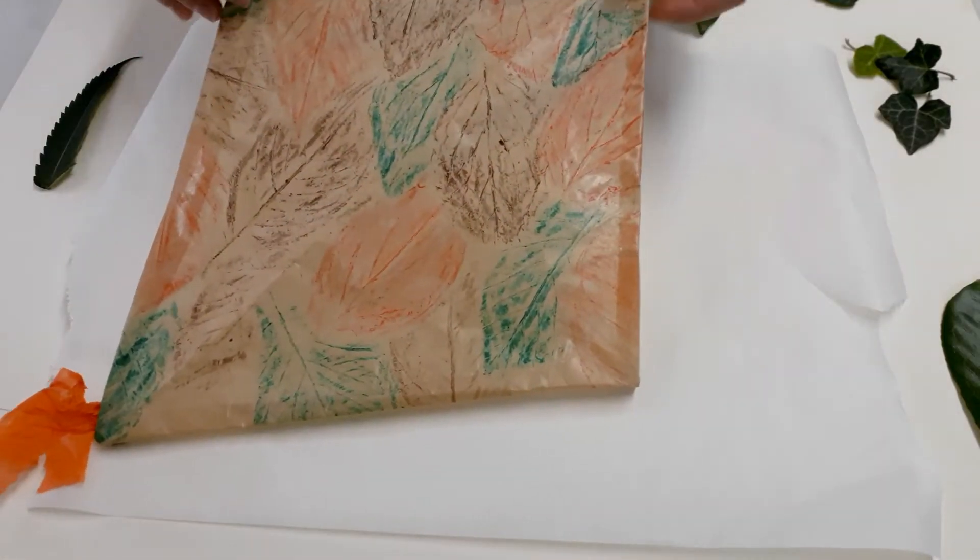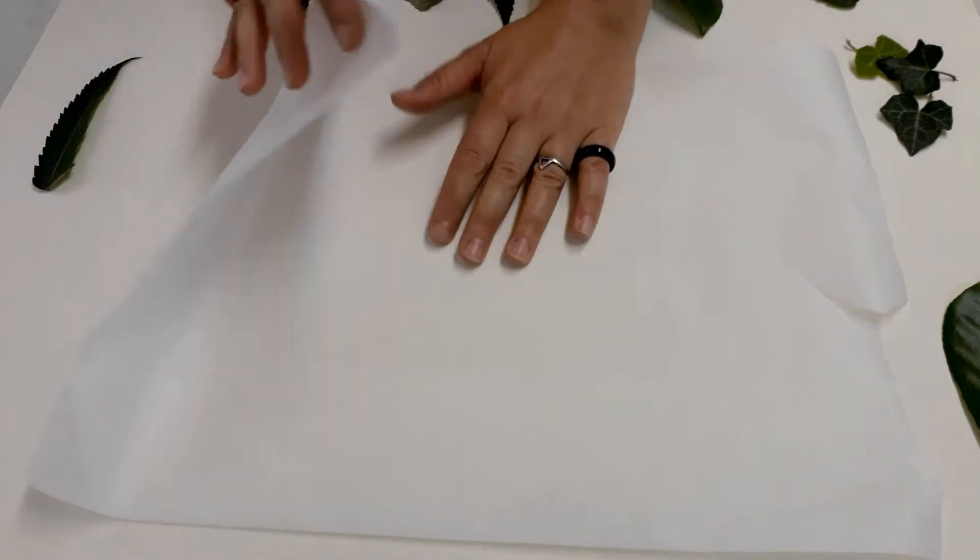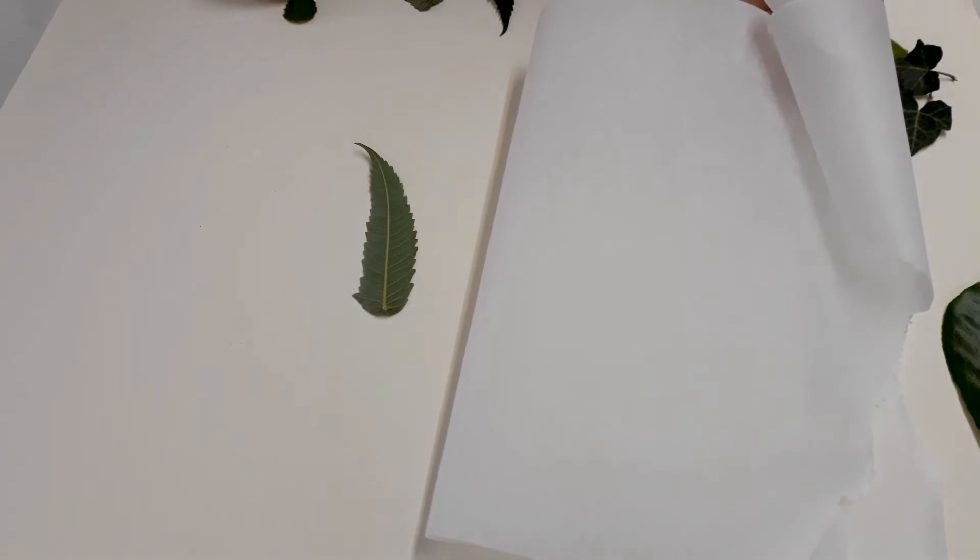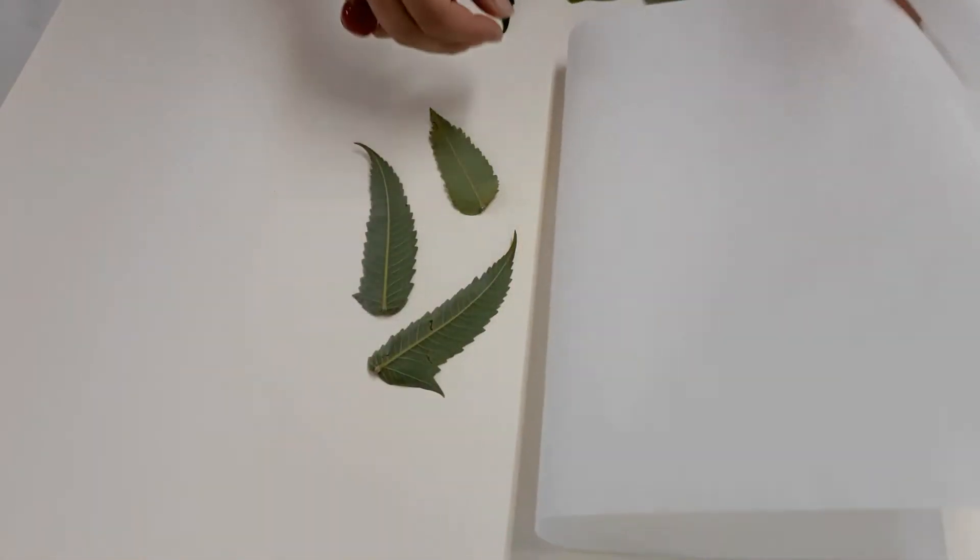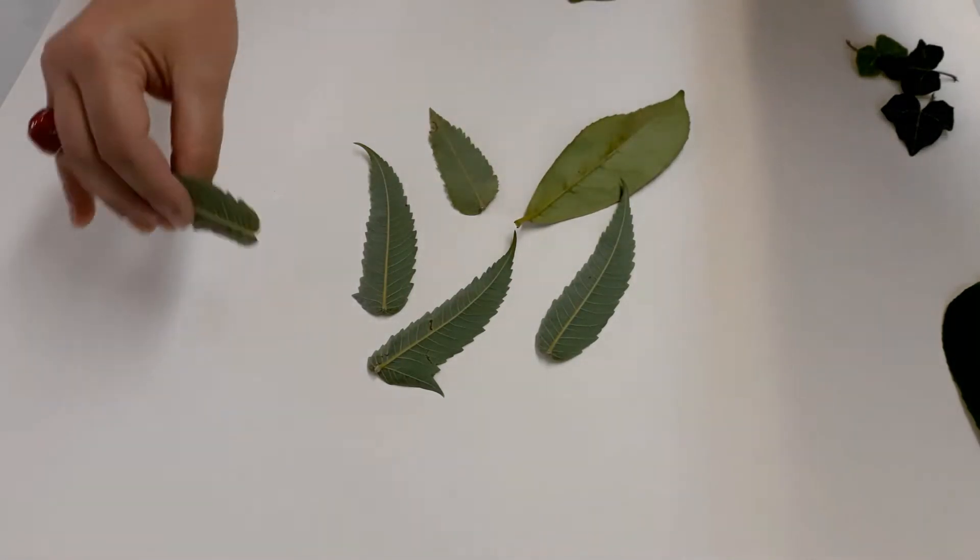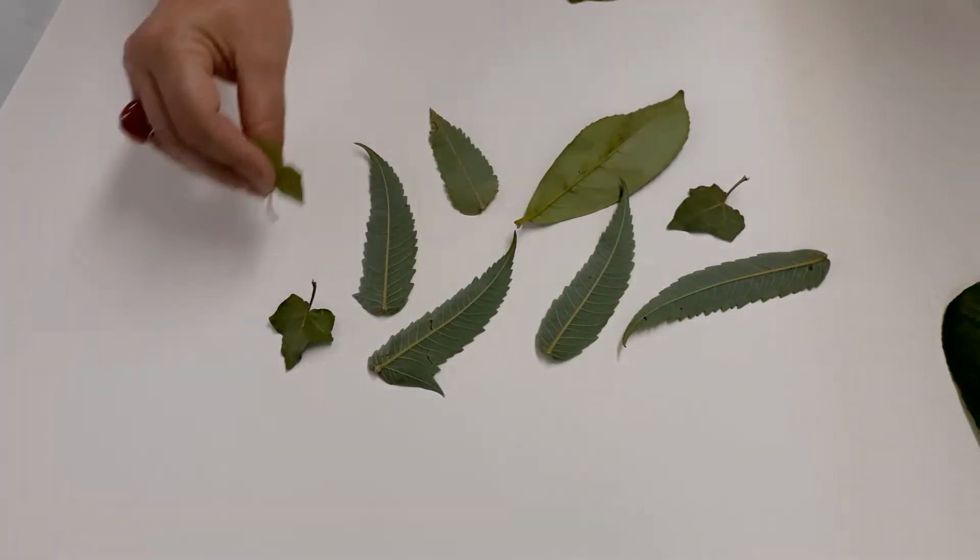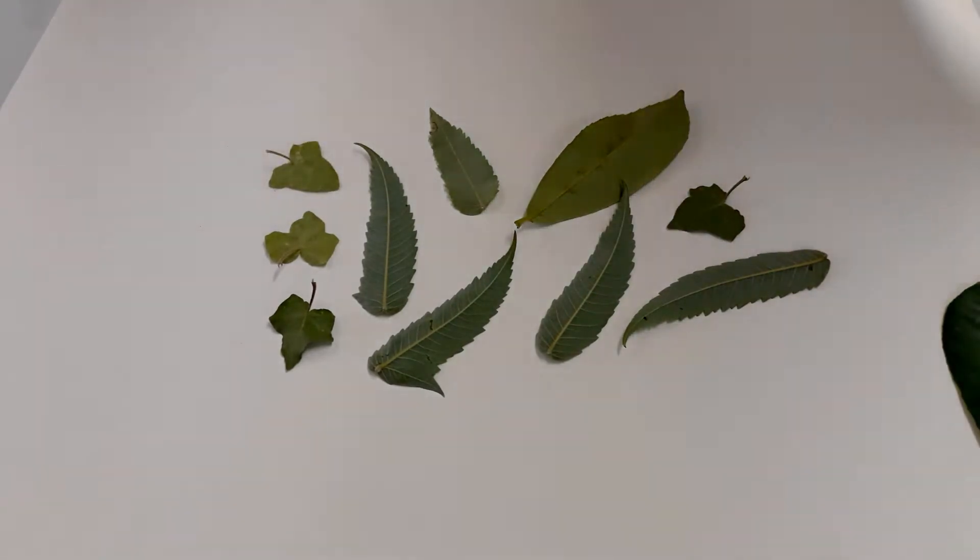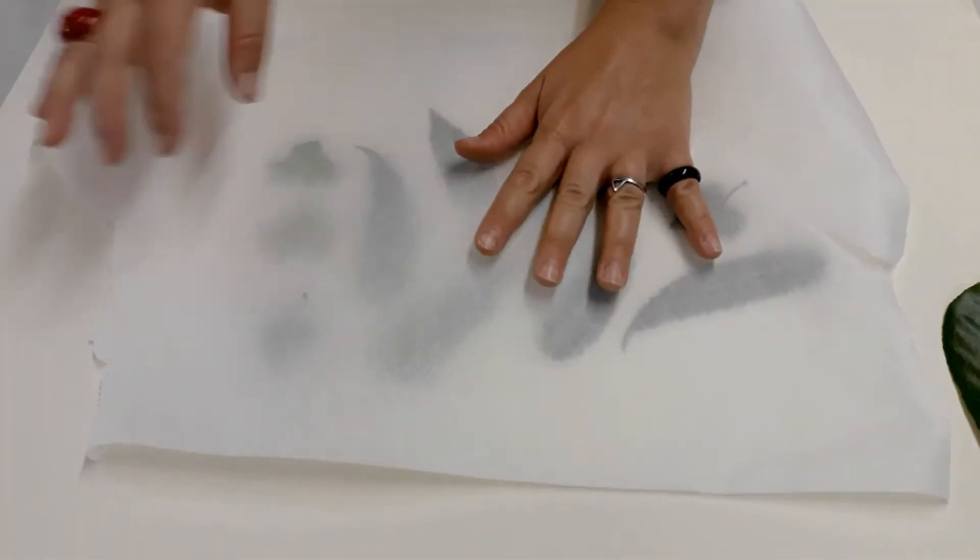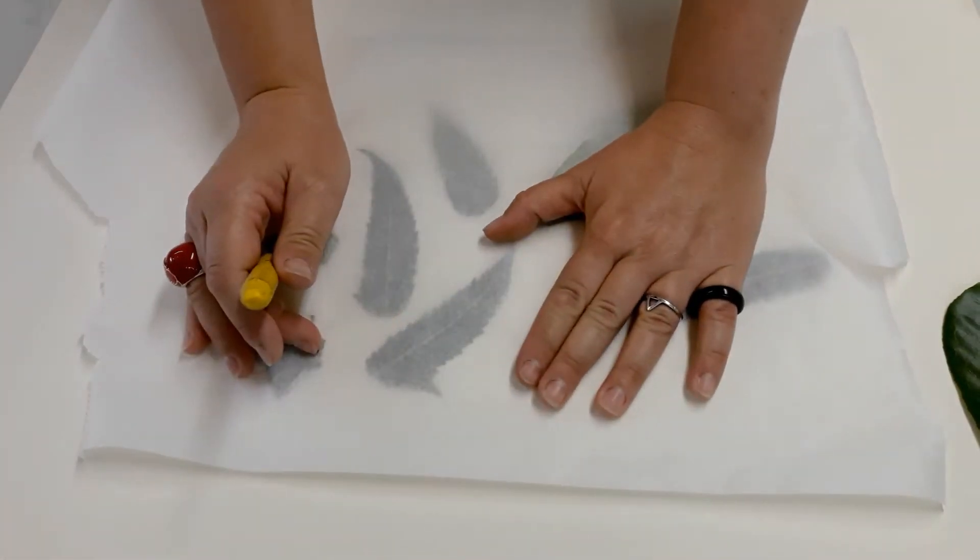Right, so this is greaseproof paper with some rubbings. Everyone should have done these as a kid at school. All you do is take your parchment or greaseproof paper and put your leaves upside down in a pretty pattern, and then we're going to rub over them. Can you see them? I'm going to do this really fast so you see the end result.